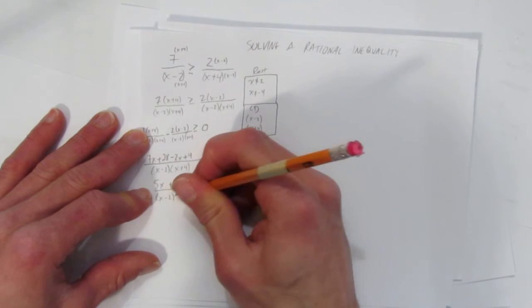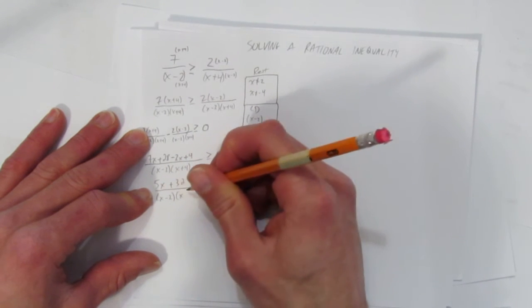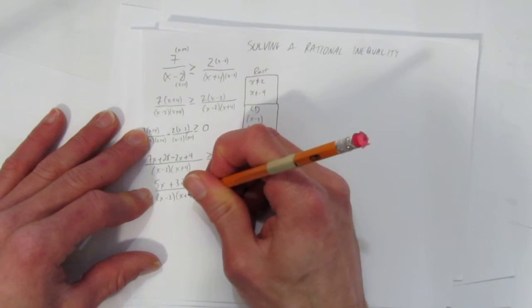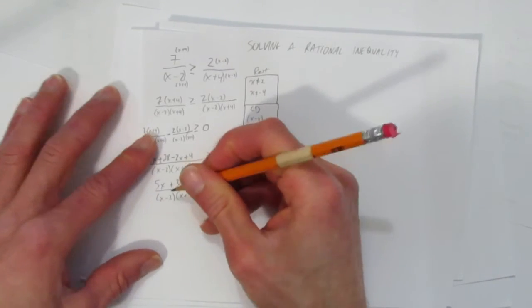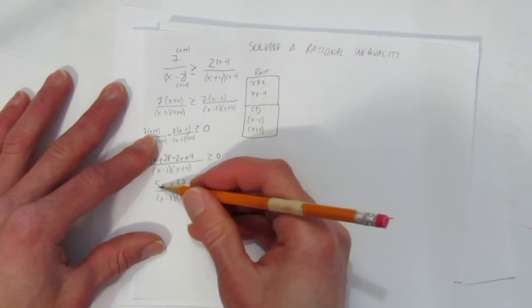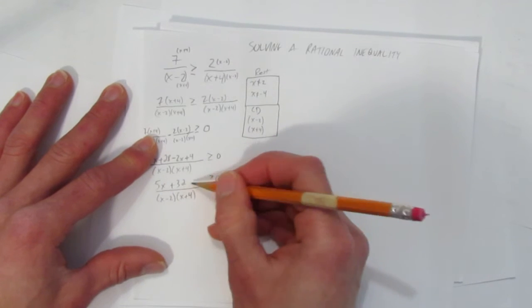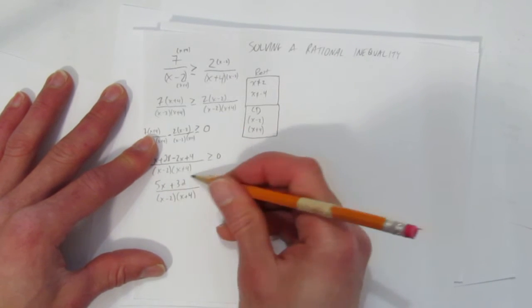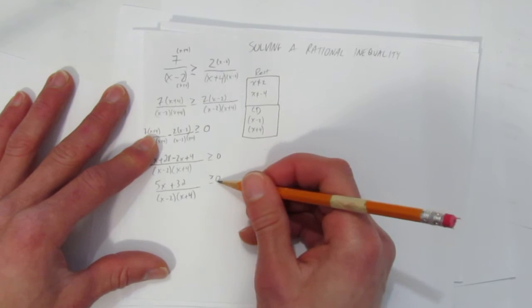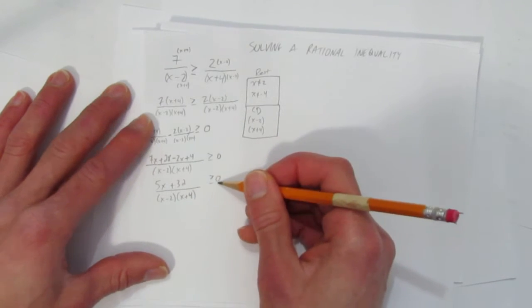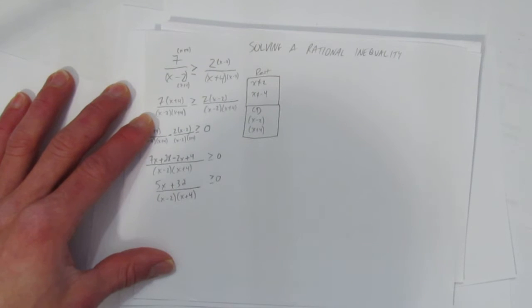So we've got everything together and factored. You might check the top to see if it factors, especially here, but if you pull out a 5, nothing really great happens, and 5 doesn't go into 32, so you can't really do that. So we're done in terms of working with this inequality, except we still have a lot more to do.